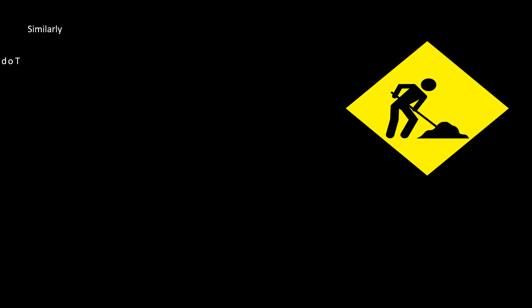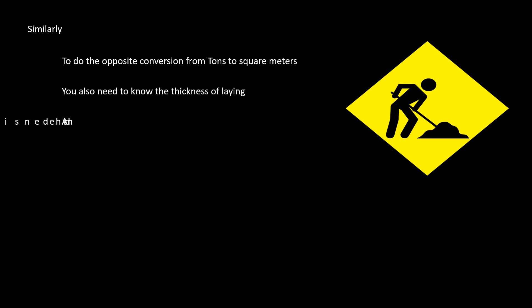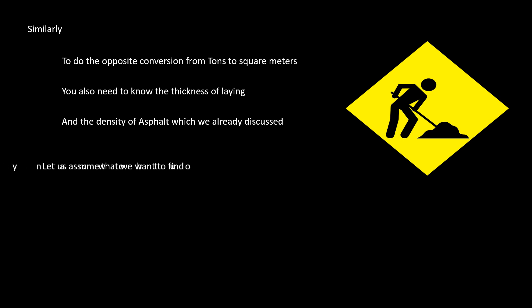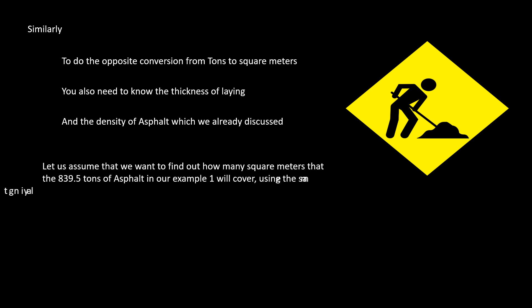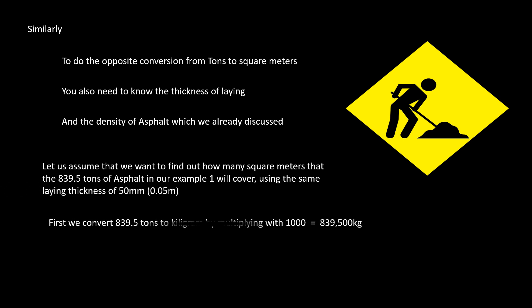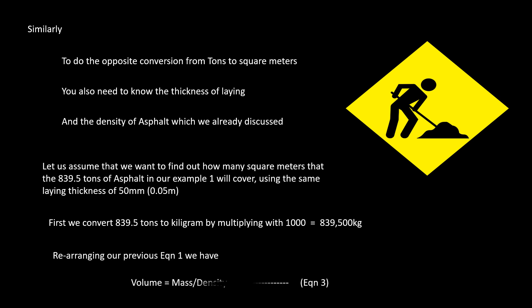Similarly, to do the opposite conversion from tons to square meters, you also need the asphalt laying thickness and density of asphalt. Let us find out how many square meters the 839.5 tons of asphalt from example one would cover, using the same laying thickness of 50 millimeters.